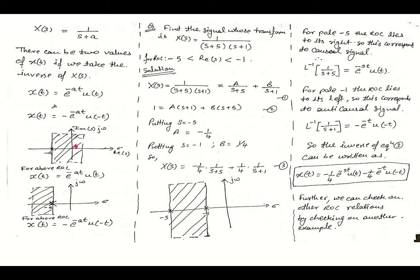To understand the ROC, first we will have to construct an s-plane. In the s-plane we have an x-axis representing the real part of s, that is sigma, and the imaginary axis of s, which we term as jΩ. If we are having a pole at s = -a, and it is given that the ROC lies to the right of this pole,